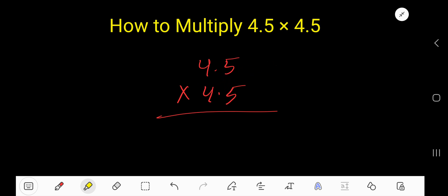Just multiply as normal. Start with this 5. 5 times 5 equals 25, write 5 and carry 2 to the next column. 5 times 4 equals 20, 20 plus 2 equals 22. Write 2 and carry 2 to the next column.